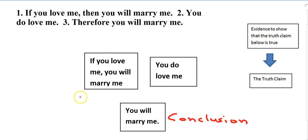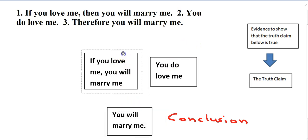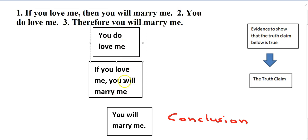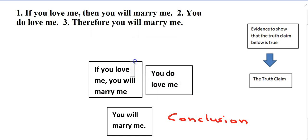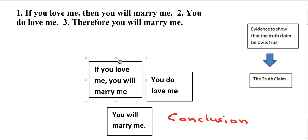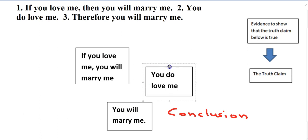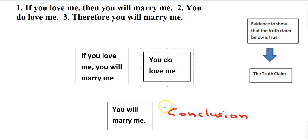So how should we think of these premises? Is one of them perhaps supporting the other? Is the fact that if you love me, you will marry me supported by you do love me? I don't think so. The fact that you love me doesn't give me evidence that if you love me, you'll marry me. What about the reverse of this? Does the claim that if you love me, you'll marry me prove that you love me? I don't think so. So it looks like these are going to be two premises side by side in a horizontal pattern.